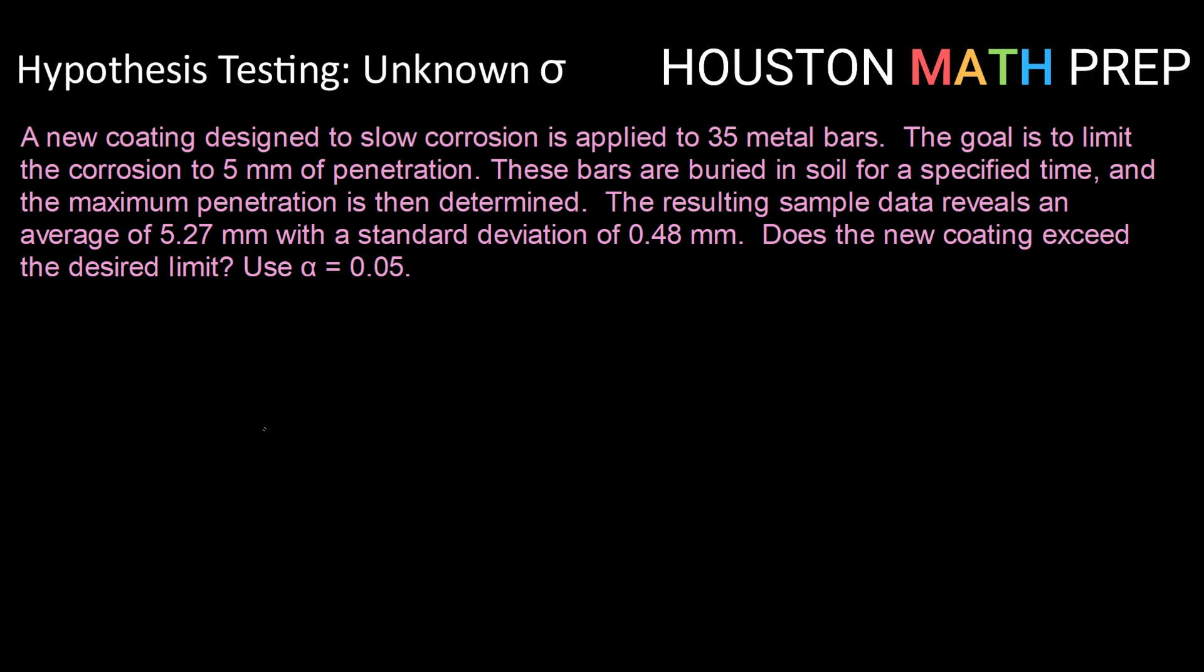So let's say that a new coating designed to slow corrosion is applied to 35 metal bars. The goal is to limit the corrosion to 5 millimeters of penetration. These bars are buried in soil for a specified time and the maximum penetration is then determined. The resulting sample data reveals an average of 5.27 millimeters with a standard deviation of 0.48 millimeters. Does the new coating exceed the desired limit? Use an alpha or significance level of 0.05.